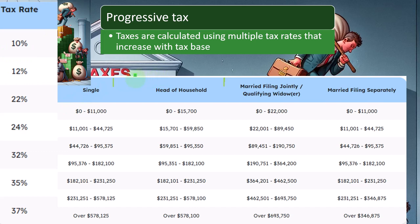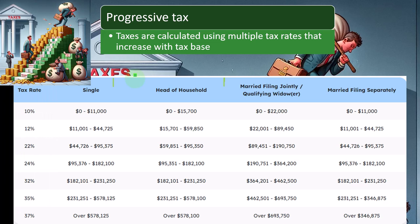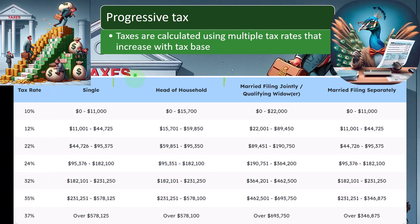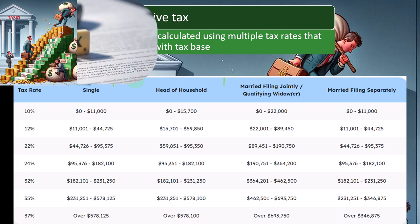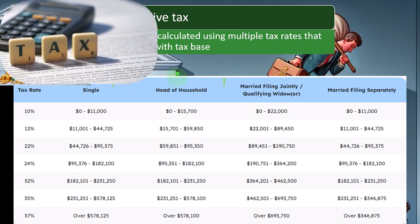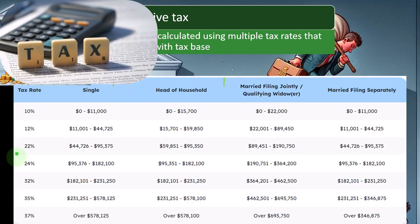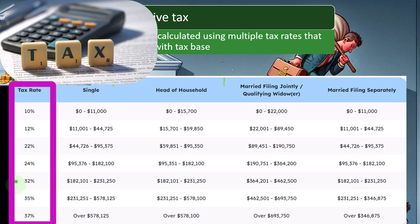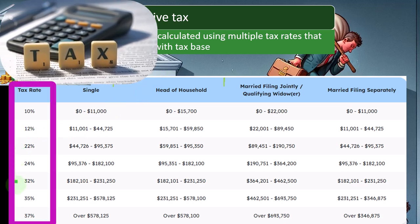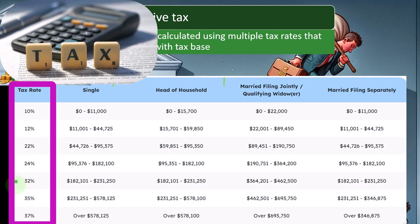Usually when we move to the left, that's going to have less complexity as we flatten the code. So as different administrations come in and try to put in policies, some will talk about flattening the tax code, which means they're trying to simplify it, and others will talk about making the tax code more progressive, which means they're going to try to add more layers or increase the tax rates at the upper layers.